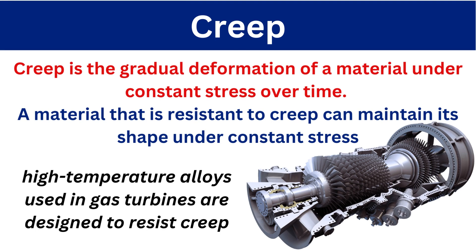The next very important property is creep. Creep is the gradual deformation of a material under constant stress over time — it will not break suddenly. A material that is resistant to creep can maintain its shape under constant stress. High-temperature alloys used in gas turbines are designed to resist creep, because creep is a gradual deformation that occurs under constant stress over time.